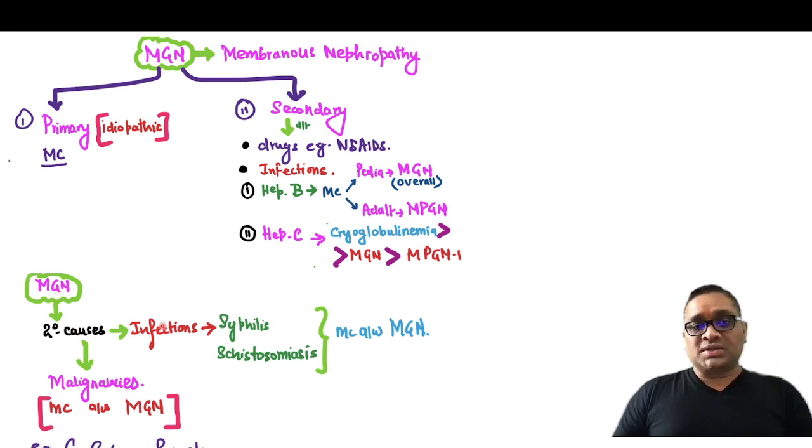Membranous glomerulonephropathy secondary causes: infections and malignancies. Remember infections and malignancies are two important ones.